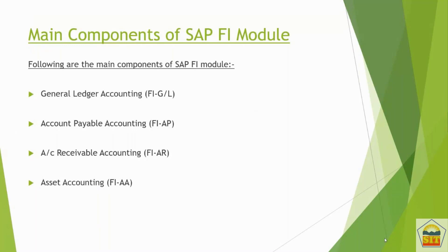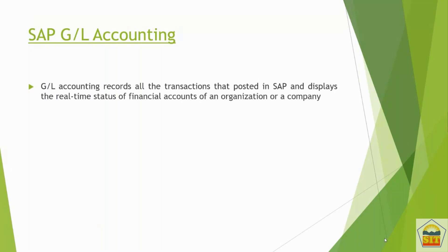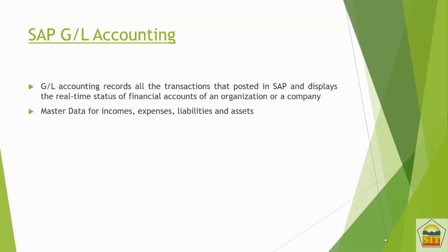Under General Ledger Accounting, we create GLs and use that data for internal and external reporting. This gives us information about the financial position of any company — what is the profit and loss, what is the balance sheet size. This is the type of information you get from General Ledger Accounting.